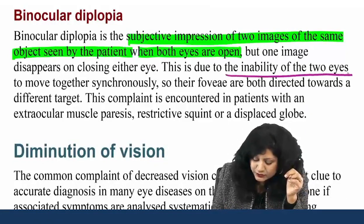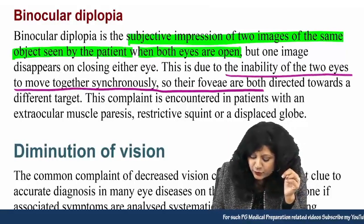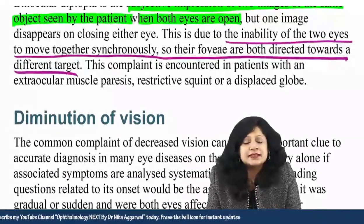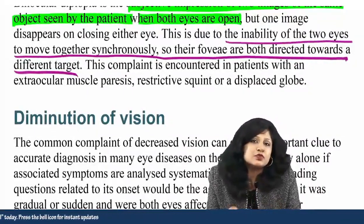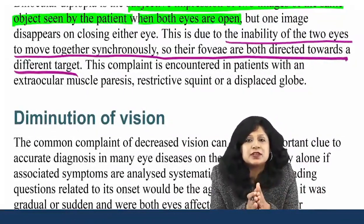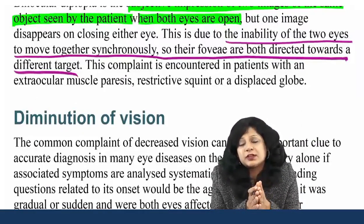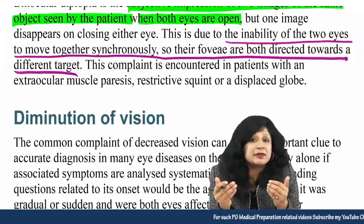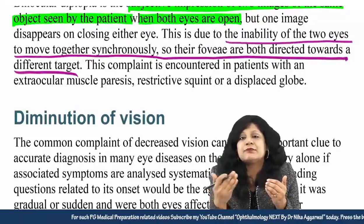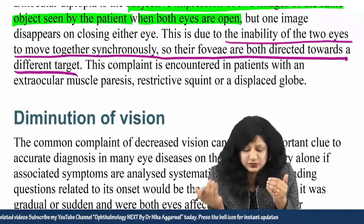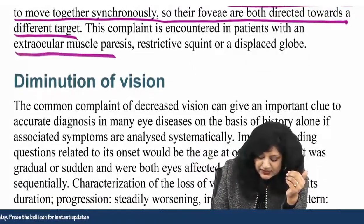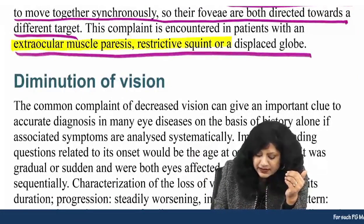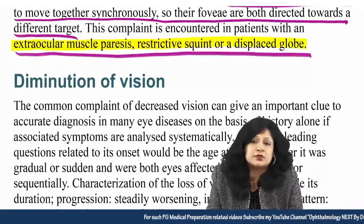This is due to the inability of the two eyes to move together synchronously, so they are not directed towards the same target — basically there is misalignment of the two visual axes. Because of misalignment, both are not in correspondence to each other. When there is no normal retinal correspondence and the fovea of both eyes are not corresponding, there will be no simultaneous perception, no fusion, and therefore no binocular single vision. This complaint is encountered in patients with extraocular muscle palsies, restrictive squint, or a displaced globe.